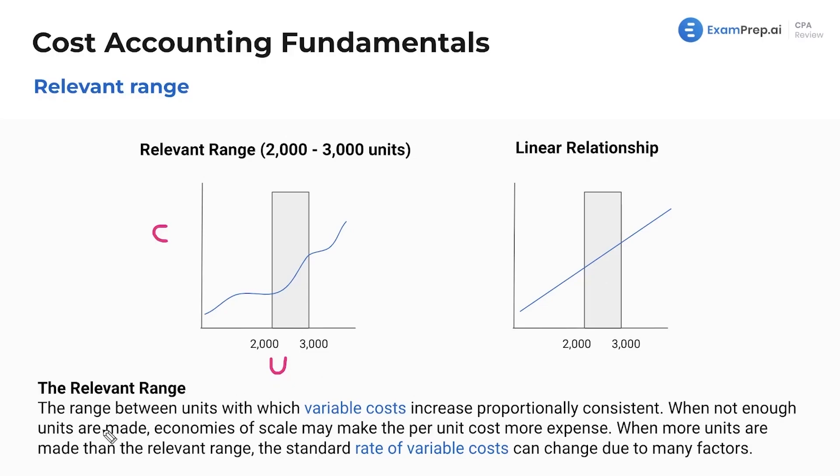What did I write specifically? The range between units with which variable costs increase proportionally consistent. When not enough units are made, economies of scale may make the per unit cost more expensive. When more units are made than the relevant range,